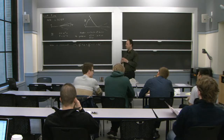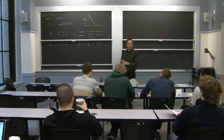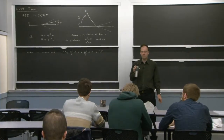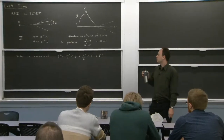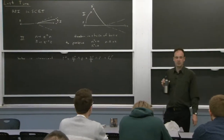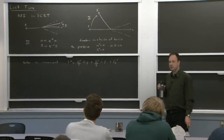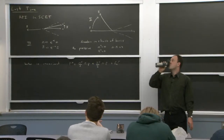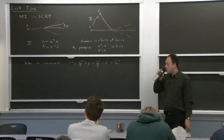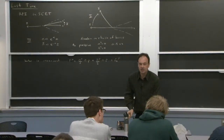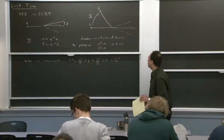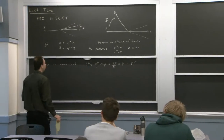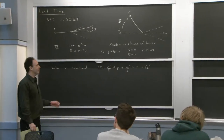Last time we were talking about symmetries of SCET. We talked in detail about gauge symmetry, and we started to talk about reparametrization invariance. We're going to continue with that today. Reparametrization invariance in SCET is kind of rich because we have lots of things that are messing up Lorentz invariance.